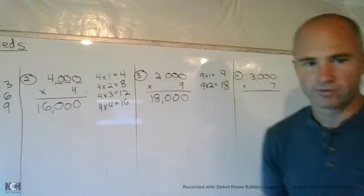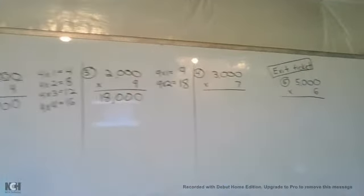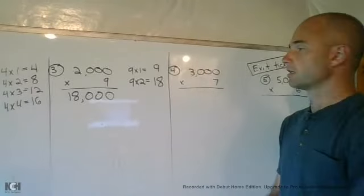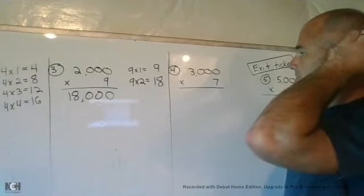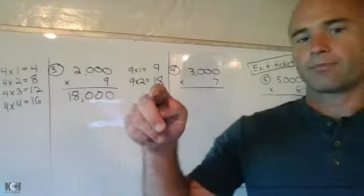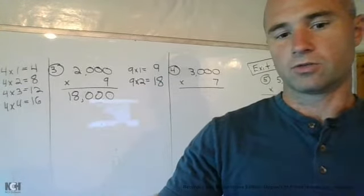All right, last one before the exit ticket is number 4. All right, 3,000 times 7. Go ahead, hit that pause button in 3, 2, 1.